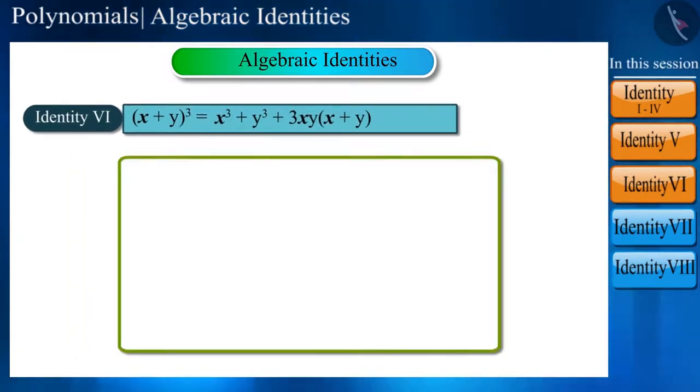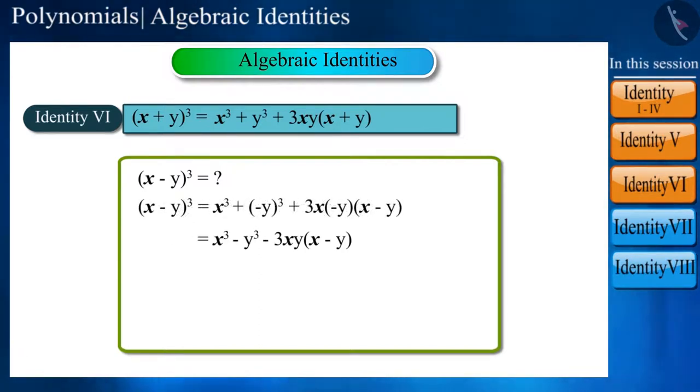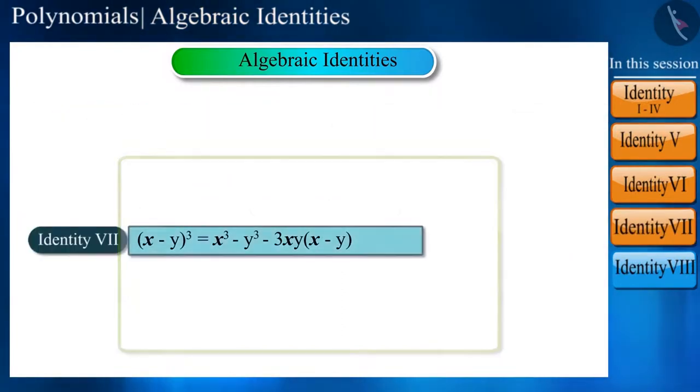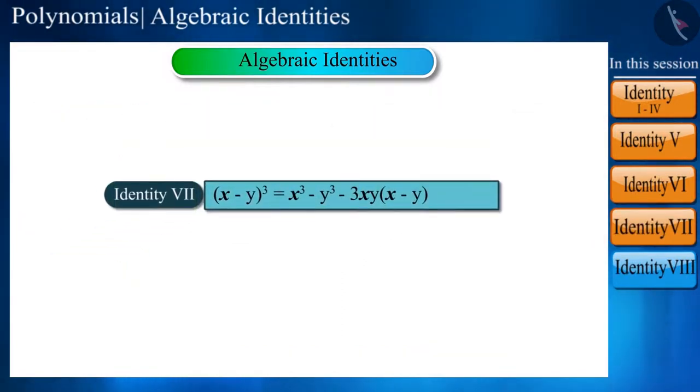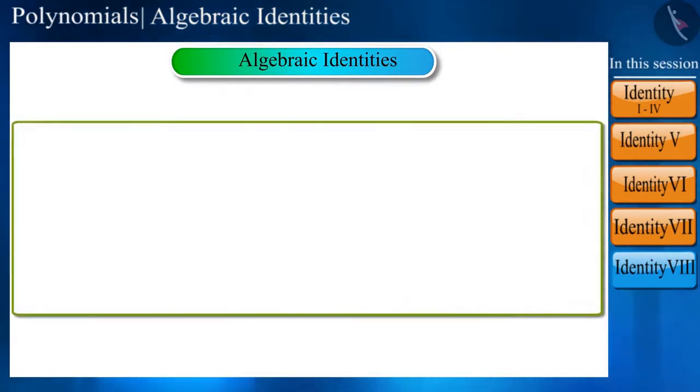The next identity is based on this only. We have to find the extended form of (x - y)³. We can derive this by substituting y with -y in Identity 6, and let's call it Identity 7.